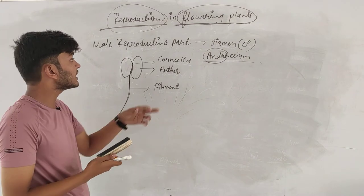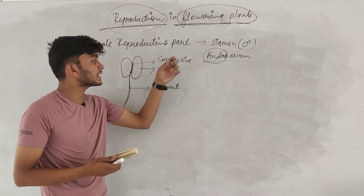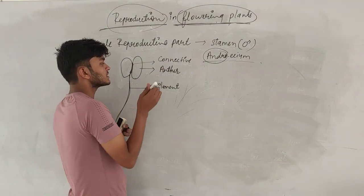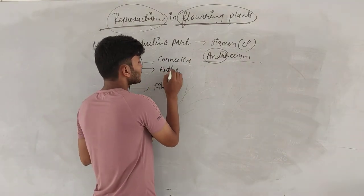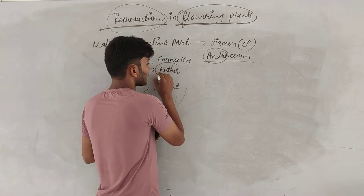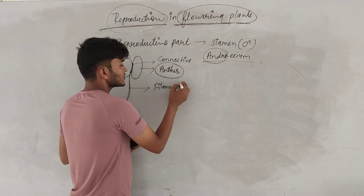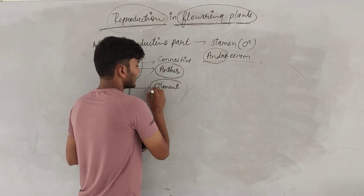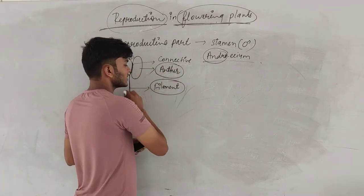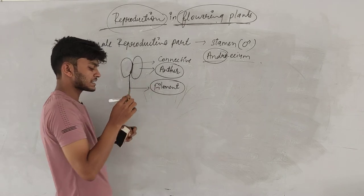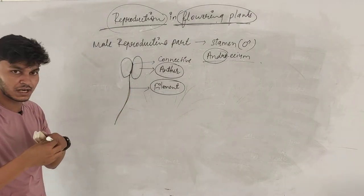Generally, there are two parts of a stamen. Number one is the top structure, which is the anther. And just underneath is a filamentous structure, and that thin-line structure is the filament.